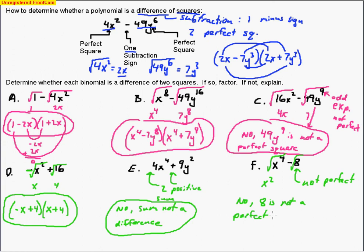So that's what you're looking for on those problems. Half the problems will ask you to determine whether the binomial is a difference of squares, and if so, factor it. If not, you have to explain why, just as we did here. The next part of this lesson will go over trinomial squares — check out part two.